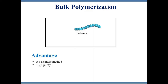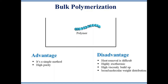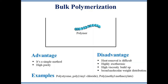The advantage of bulk polymerization is that the system is very simple, the polymer obtained is pure, and large castings may be prepared directly. The disadvantage is that heat transfer and mixing become difficult as the viscosity of the reaction increases, which leads to broad molecular weight distribution. Due to the highly exothermic nature of the reaction, heat transfer is very difficult and this method gives low molecular weight polymers. This method is used to synthesize polystyrene, polyvinyl chloride, polymethyl methacrylate, and low density polyethylene.